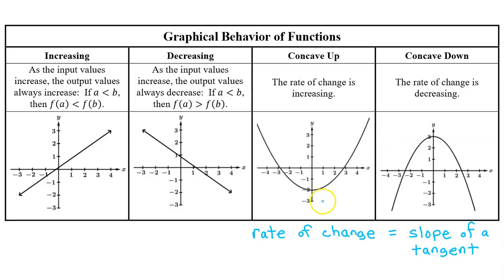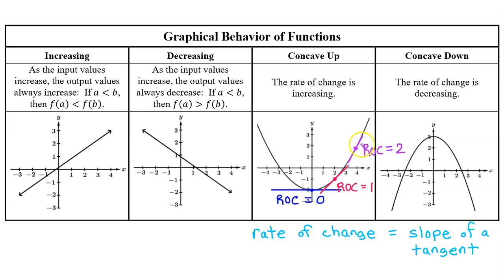Given the graph of a function, its rate of change is indicated by the slope of a tangent line. For example, at x = 0 the rate of change is 0 because the tangent line slope is 0. At x = 2 the rate of change is about 1, and at x = 4 it's about 2. Notice that the rate of change is increasing as we move left to right — going from 0 to 1 to 2. This always happens when a function is concave up, a relationship that comes up throughout this course and into calculus.